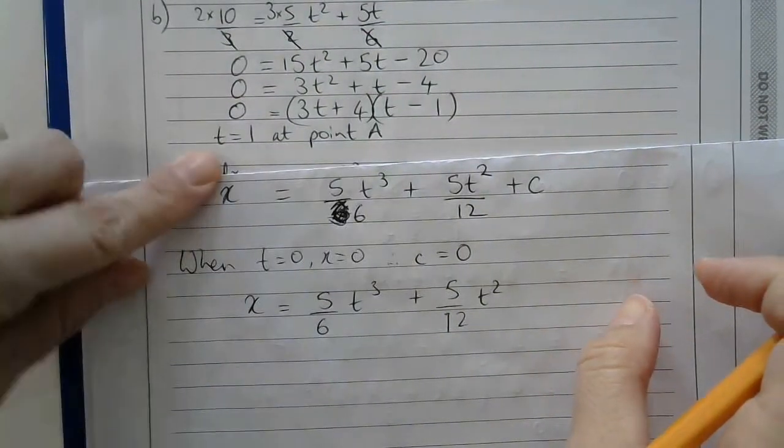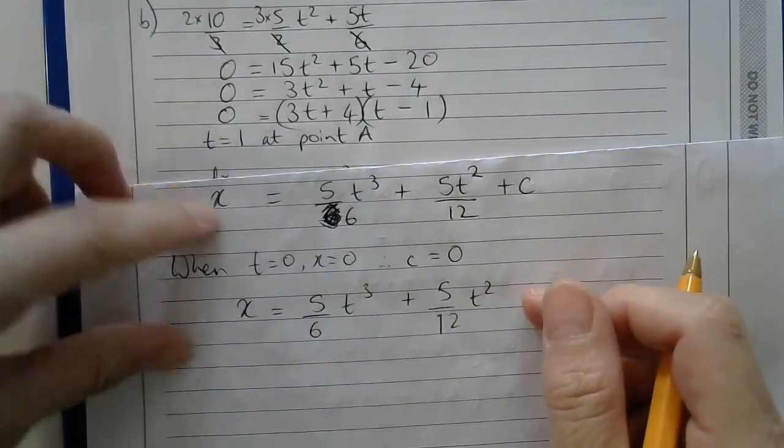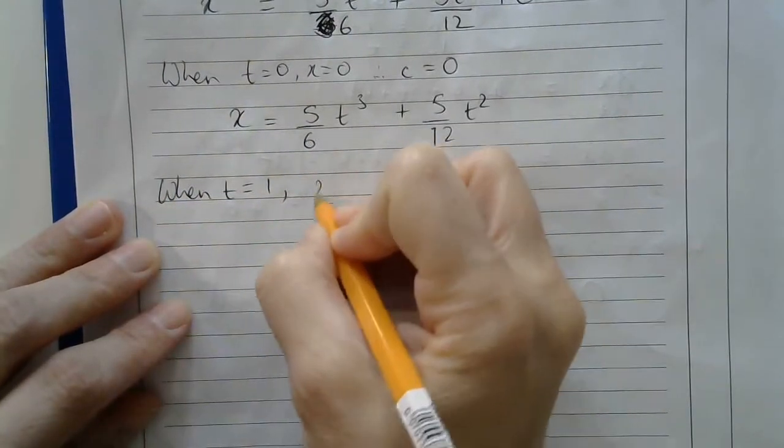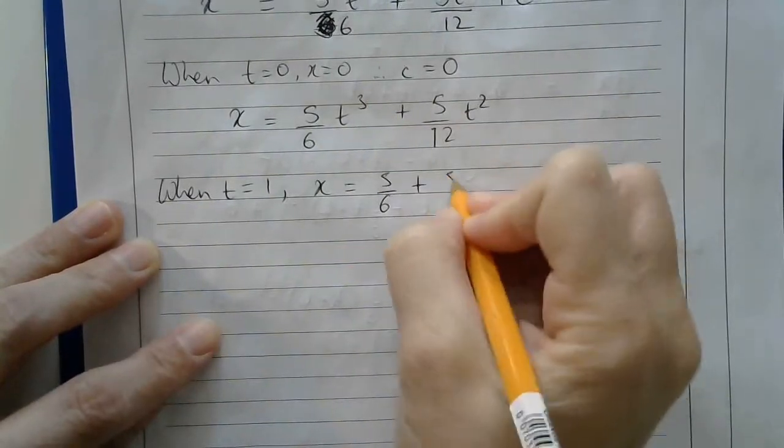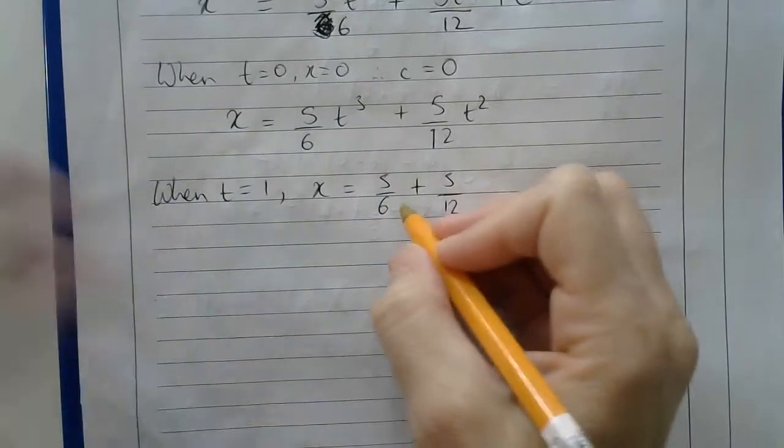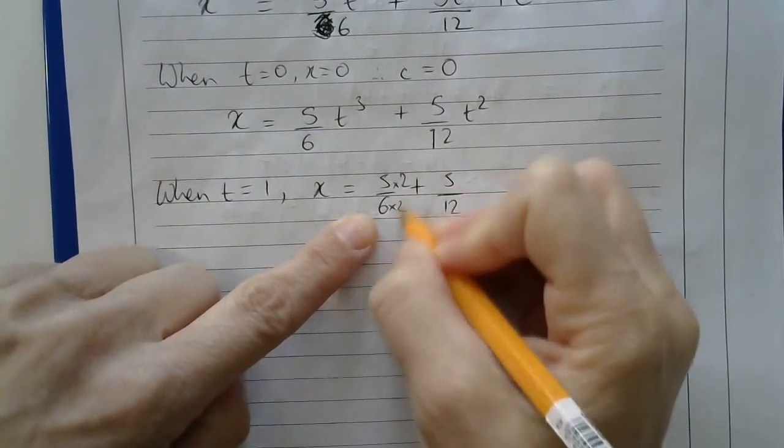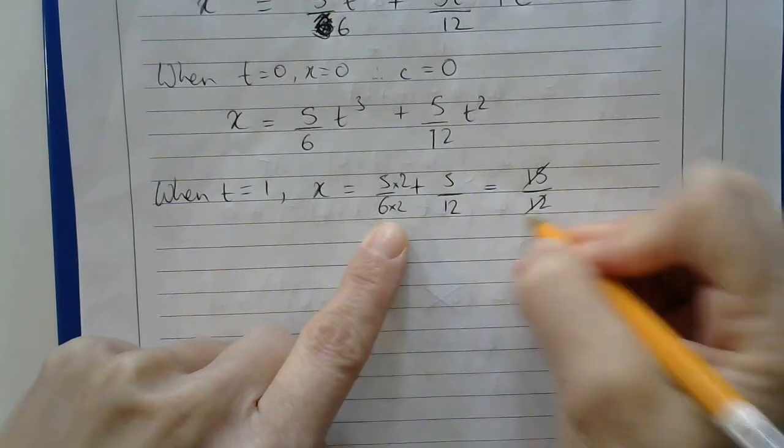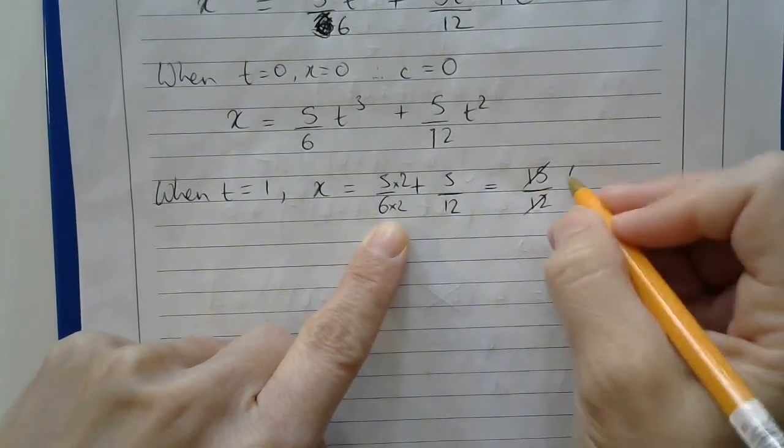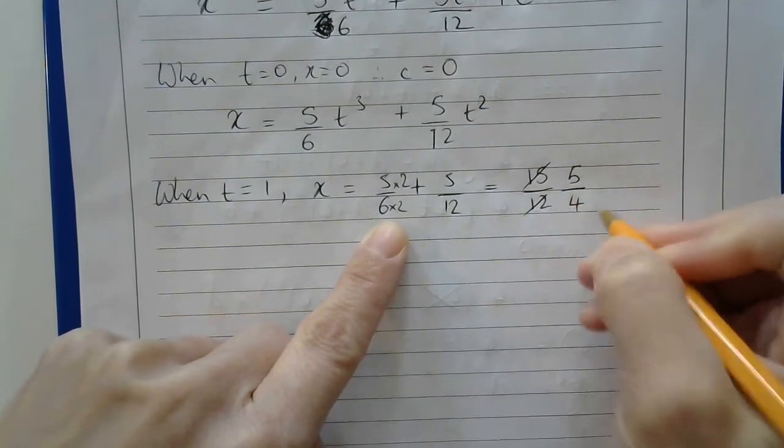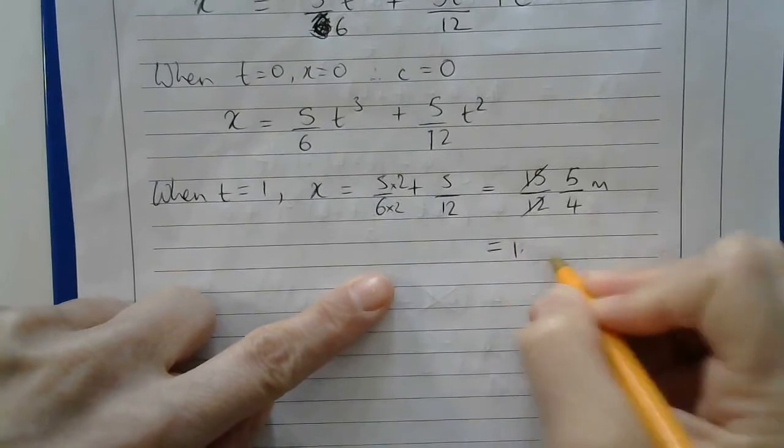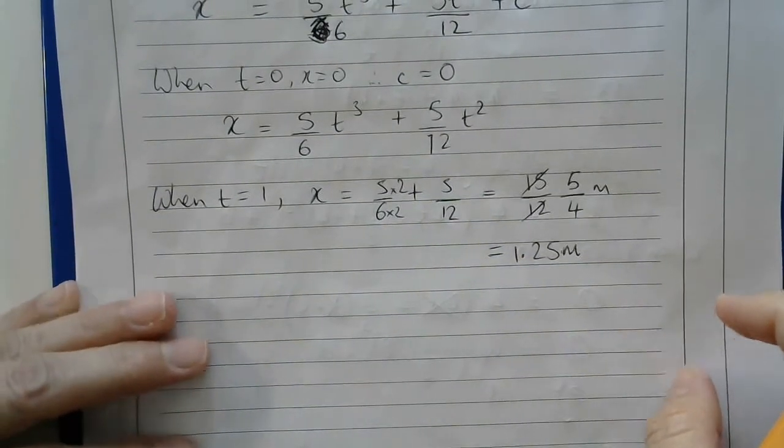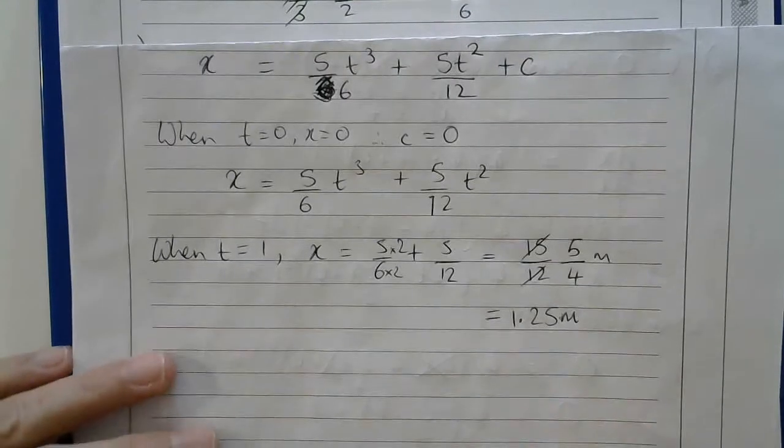And now I can pop in this value of t that I found into this expression to find the distance away. So when t is 1, I end up with x is 5/6 times 1 cubed plus 5/12 times 1 squared. And if I just double the top and the bottom of this one, then I end up with 15/12, which will simplify to dividing by 3. So I get 5/4 meters. So in other words, 1.25 meters exactly. That part of the question is worth 5 marks. I hope you found this solution helpful. Good luck with your studies.